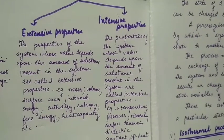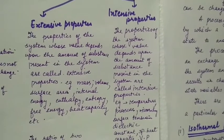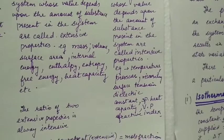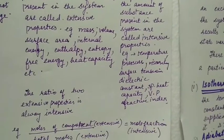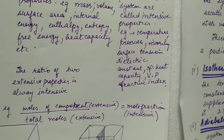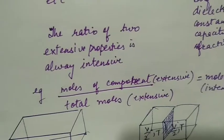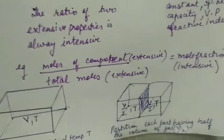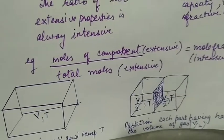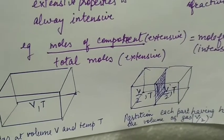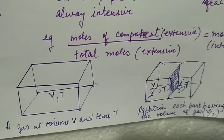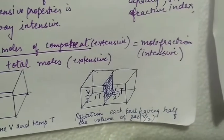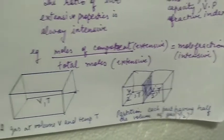Intensive property is the property whose value does not depend upon the amount of the substance present in the system. For example, temperature, pressure. Ratio of extensive to extensive properties is always intensive. So if we divide moles by total mass, moles are extensive, total mass is also extensive, but the ratio of these two - the mole fraction - will be an intensive property.